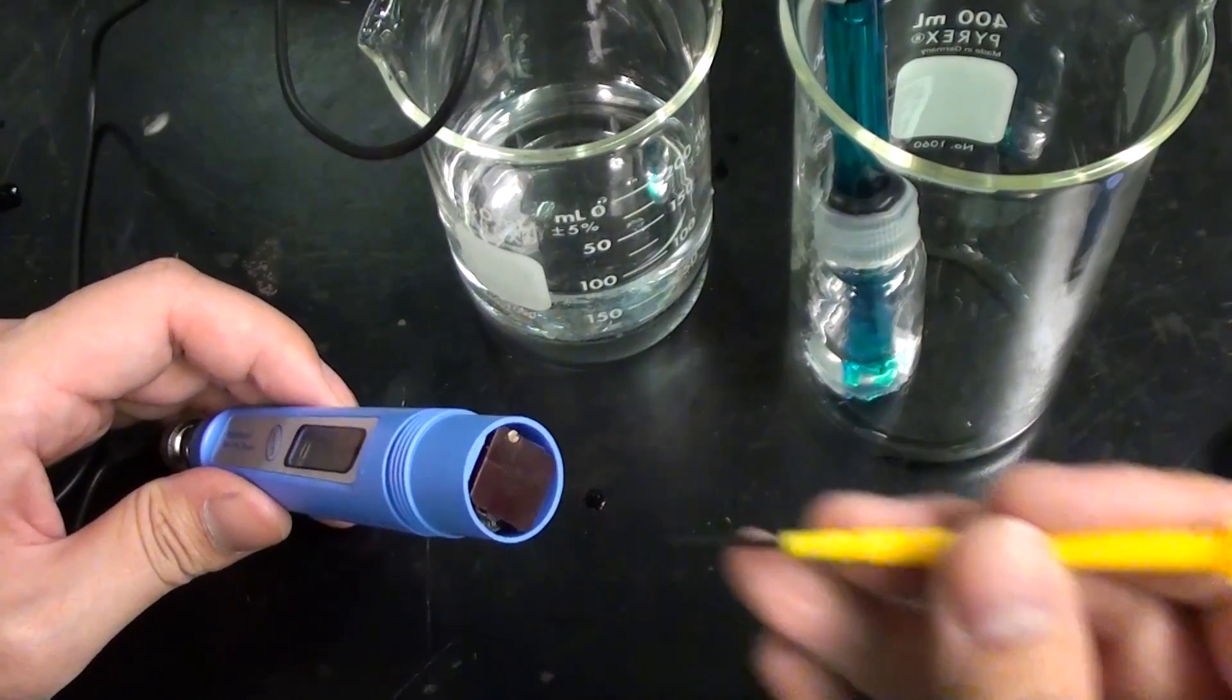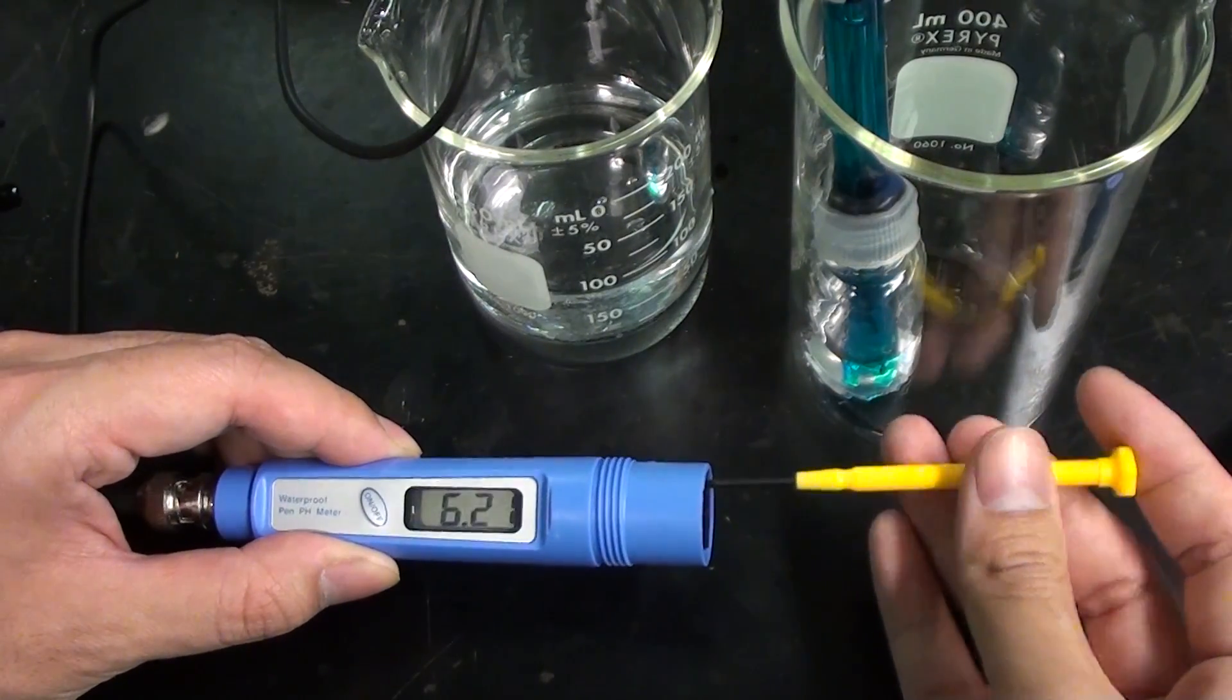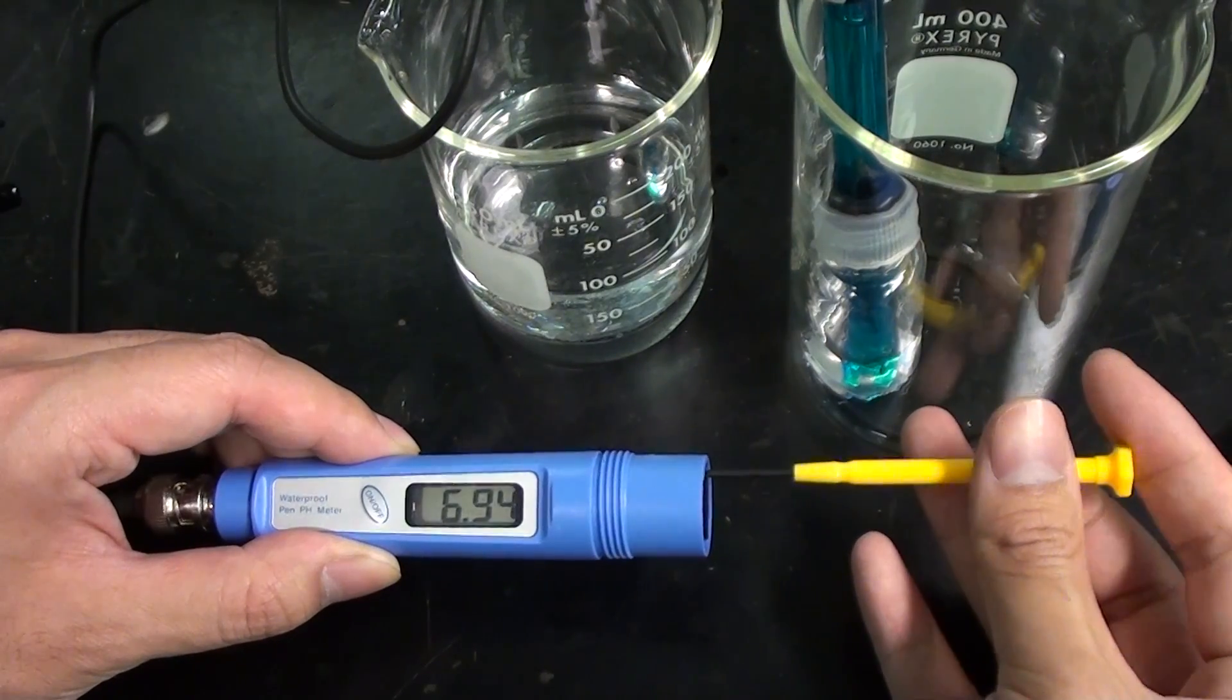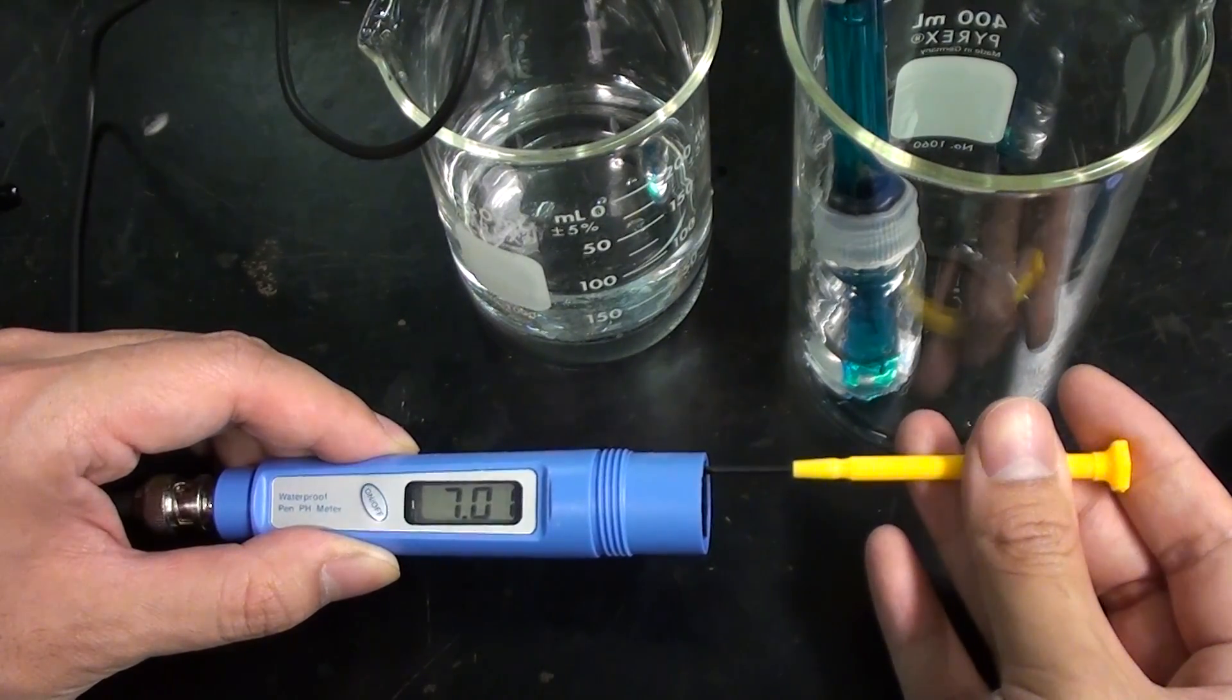Now a glass electrode can drift a lot in terms of reading, so even if you calibrate yesterday, it can drift to something different today. It's best to recalibrate before doing an experiment.